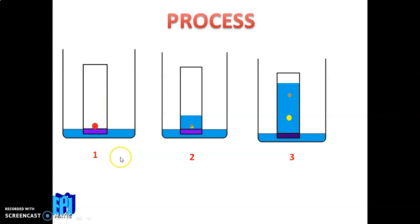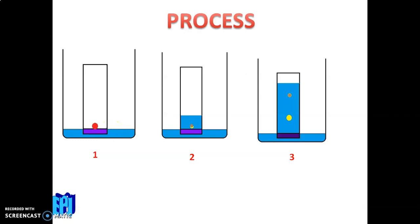First, mark a point or draw a line near the bottom of the plate. Dip the plate into the solution, but ensure that the marked point does not dip into the solution. Then, place a small spot of the sample using a capillary tube at that point. Capillary rise is the movement of water against gravity through small pores between molecules.